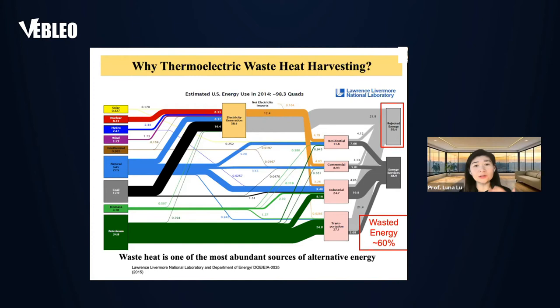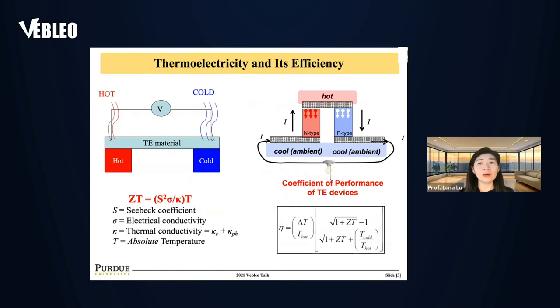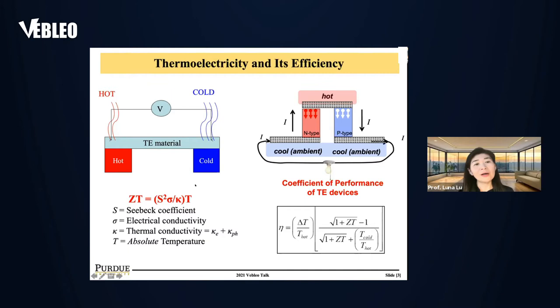Of course, we all know the answer is yes. There are a lot of ways to re-harvest this energy, and one particular way we're looking at in our research group is thermoelectricity. This scientific effect was discovered by Thomas Seebeck in 1884. If you put a semiconductor material or two dissimilar metals at the hot and cold junction, the temperature difference will drive electrons moving from the hot to cold side, generating an open-circuit voltage — that is the Seebeck effect. By harvesting the Seebeck effect, we can generate thermoelectric power.